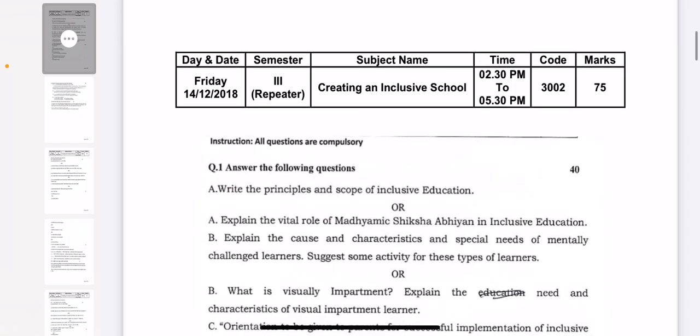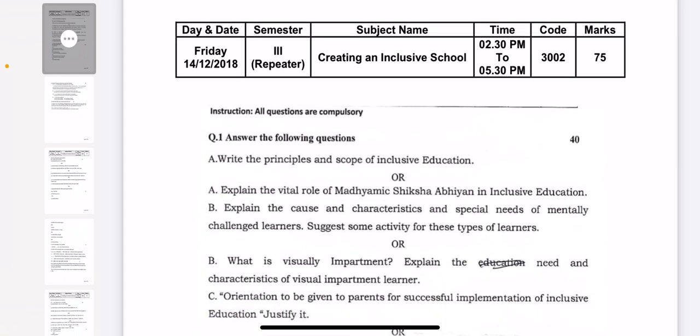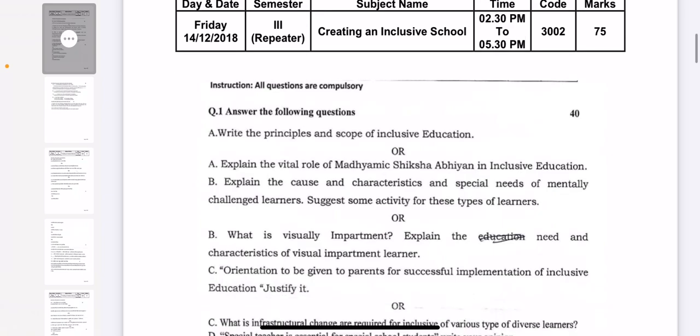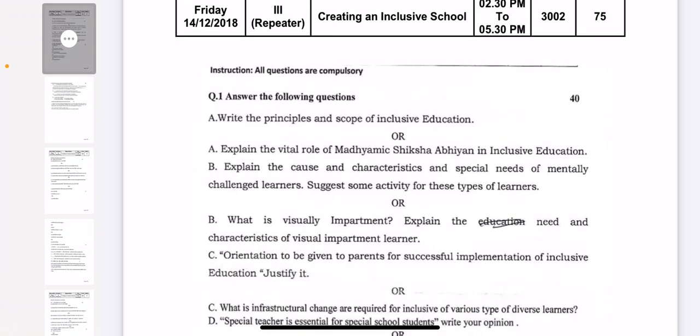Exam timing was 2:30 to 5:30 for this particular paper in 2018, and particularly it is a 75 marks paper. So let's begin with discussing the questions. All these questions' answers along with PDF you will get from the description box, so you can download from there.